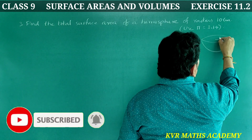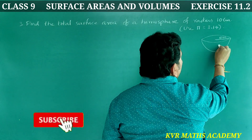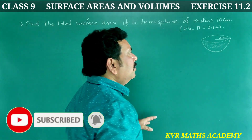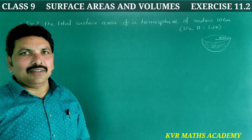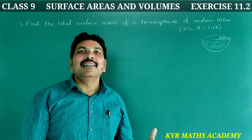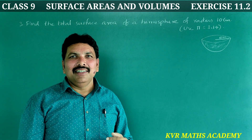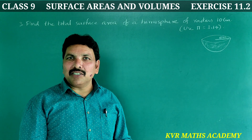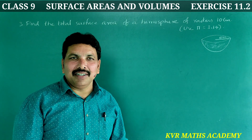Radius is 10 centimetres. We need to find the total surface area. The total surface area of a hemisphere formula is 3πr². The curved surface area of the hemisphere is 2πr², and the total surface area is 3πr².